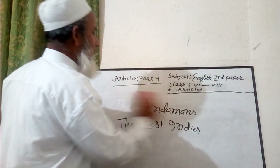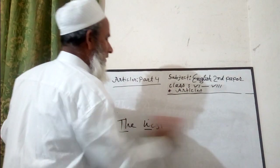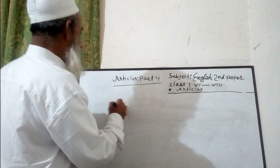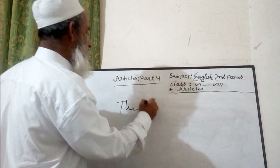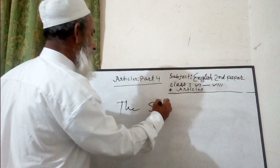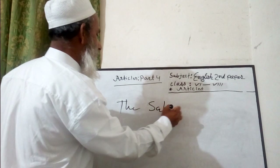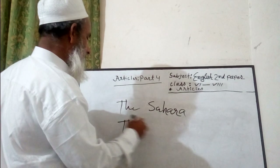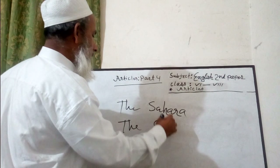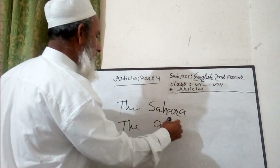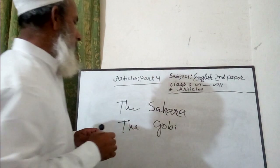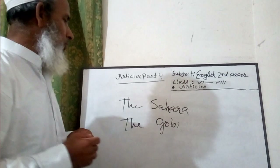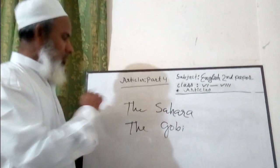We also use 'the' before deserts. For example, the Sahara and the Gobi — these are names of deserts. So before desert names, we also use 'the'.